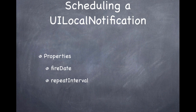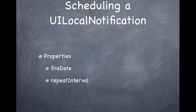Now let's talk about how to schedule a notification. The two relevant properties are fire date and repeat interval. Fire date is an NSDate specifying exactly when the notification should alert the user — this is essential. Repeat interval lets you specify that a notification should repeat again and again: every weekday, once a month, once a week, and so on.